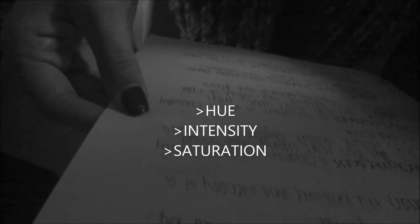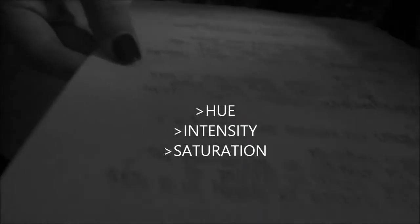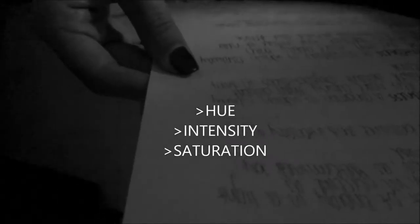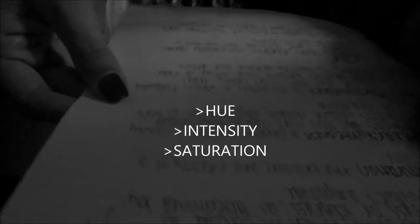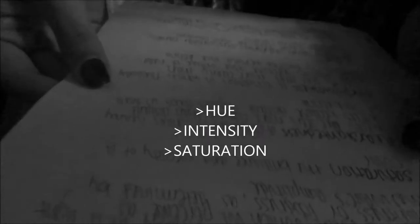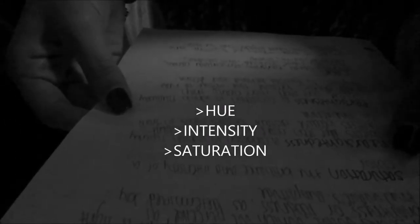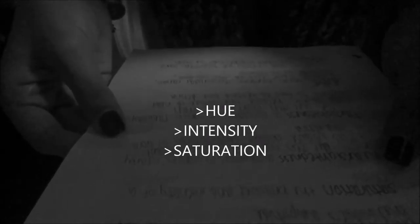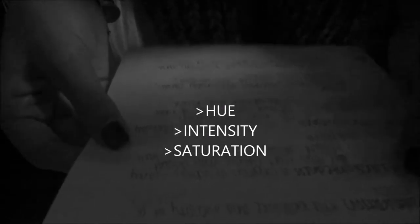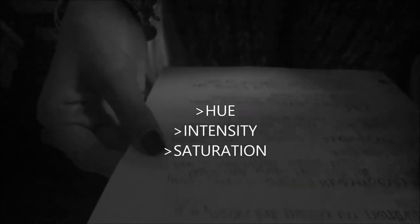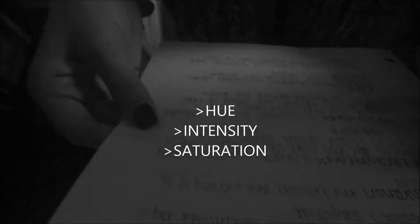Some things to take into account when talking about color are hue, intensity, and saturation. Hue is the dimension of color determined by the wavelength of light — it's what we know as color names, such as blue, red, and green.